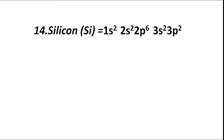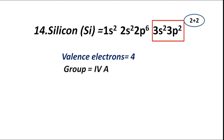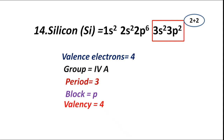Atomic number 14, silicon (Si), has electronic configuration 1s2 2s2 2p6 3s2 3p2. The valence shell is third or M. Valence electrons from 3s2 are 2, and from 3p2 are 2. Total valence electrons: 2 plus 2, equal to 4. Hence group IVA or 4A, period 3. Highest coefficient is 3, therefore period third. Block P — valence electrons fill p sub-shell. Valency is 4.